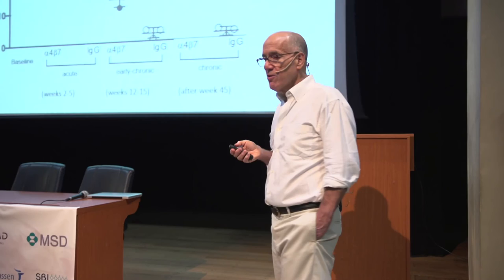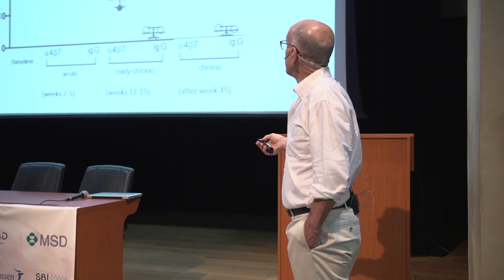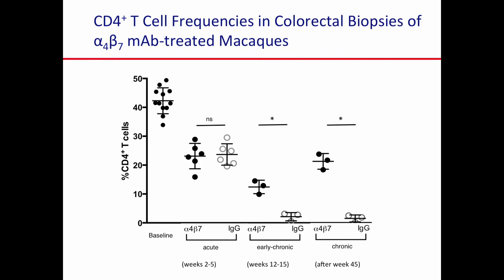We decided to take biopsies and look at them that way, and found pretty much the same thing. Here you're seeing the percentage of CD4-positive T cells in colon biopsies — uninfected animals give our baseline. In acute infection, there's a reduction in both the alpha 4 beta 7 and IgG treated animals — about the same. If you look at early chronic infection at weeks 15, there's still a loss, but it's not nearly as dramatic as the IgG. The loss occurring in the untreated animals appears to be arrested. And if you look way out after week 45, that's maintained — so even though the antibody is gone, you seem to have preserved your CD4-positive T cells. We don't know the mechanism, but it's something we want to pursue.